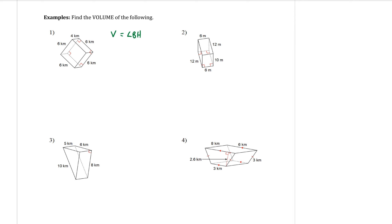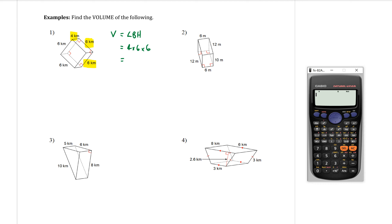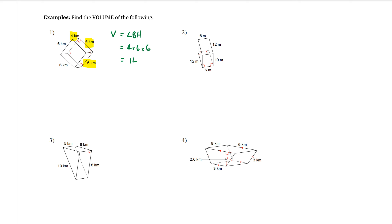This shape has more than three numbers shown because some are written twice. Six is both the length and the breadth, and the height going up is four. So the three measurements to use are six, six, and four — the order you multiply them doesn't matter. Going four times six times six gives 144. This is measured in kilometres, and because it's volume the units are cubed: 144 km³.